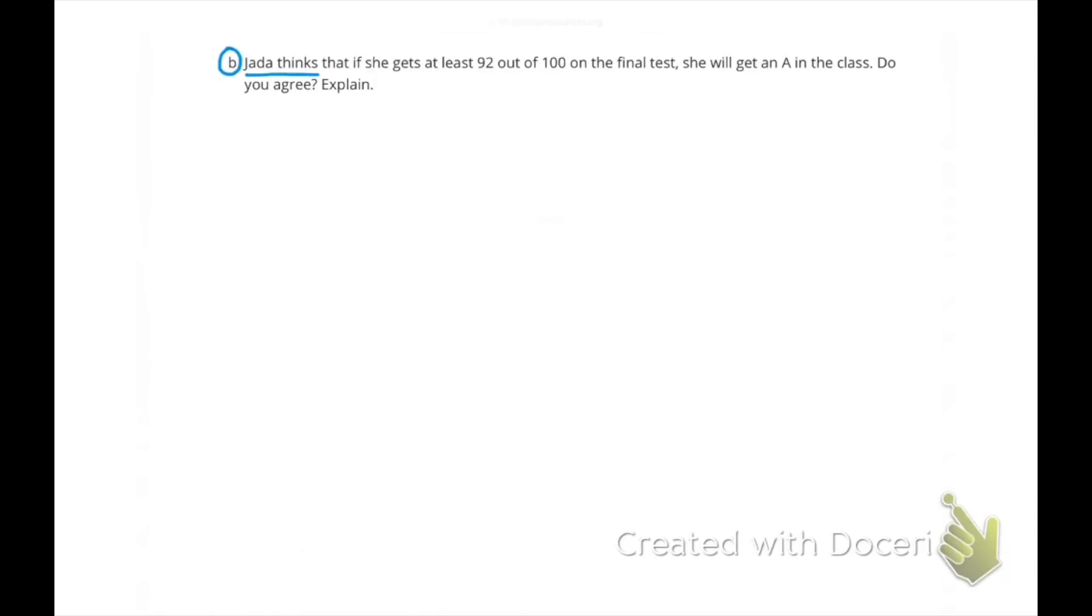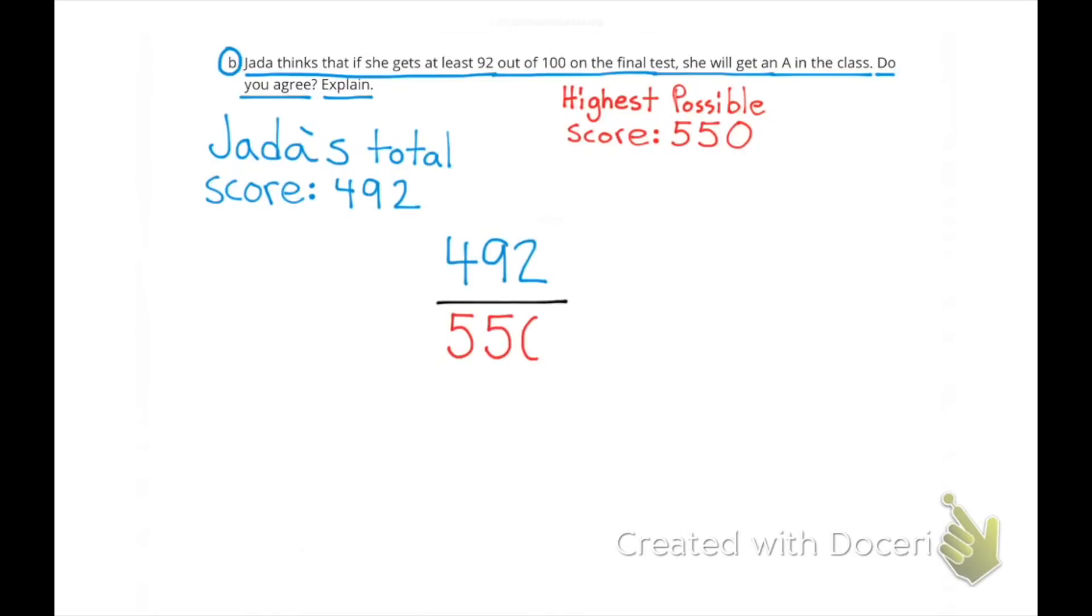B: Jada thinks that if she gets at least 92 out of 100 on the final test, she will get an A in the class. Do you agree? Explain. Well, the highest possible score would be 550 points altogether. Jada's total score after getting 92 points on her final test would be 492. And 492 is 89.45% of 550. So no, she has less than 90%. She's not going to get an A in the class.